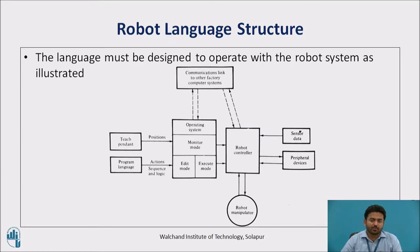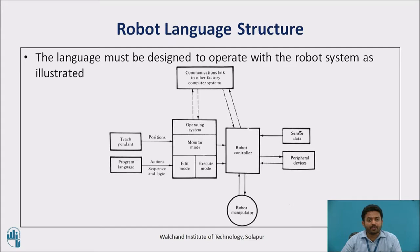Robot Language Structure: The previous session on Robot Programming was devoted to the different generations of Robot Programming Languages. The current session will be concerned with Robot Language Structure, Elements and Functions. The language must be designed to operate with the robot systems — it must be able to support the programming of the robot, control of the robot manipulator, and interfacing with peripherals in the work cell, for example sensors and manipulators. It should also support data communications with other computer systems in the factory.